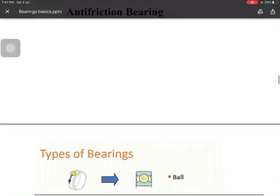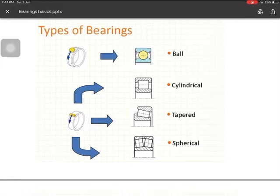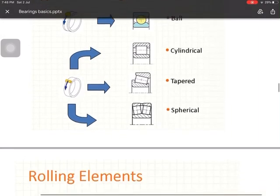In anti-friction bearings, the friction is always less because it is rolling friction. Anti-friction bearings are categorized into two types: ball bearings and rolling bearings. Ball bearings include deep groove ball bearings and angular contact ball bearings. Rolling bearings include cylindrical bearings, taper roller bearings, and spherical bearings.